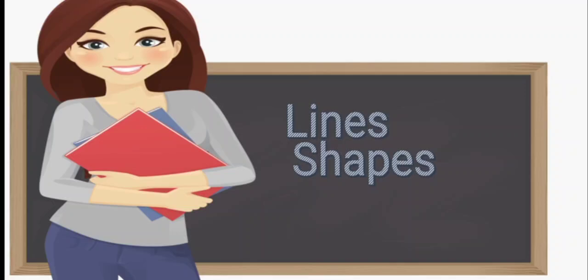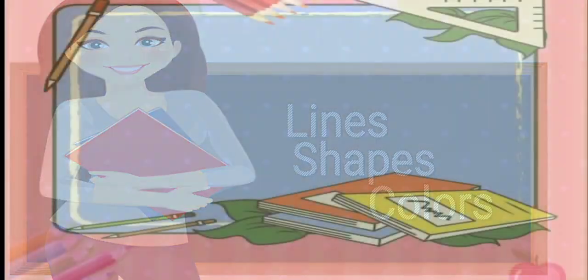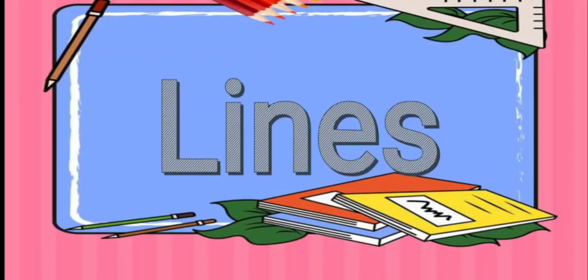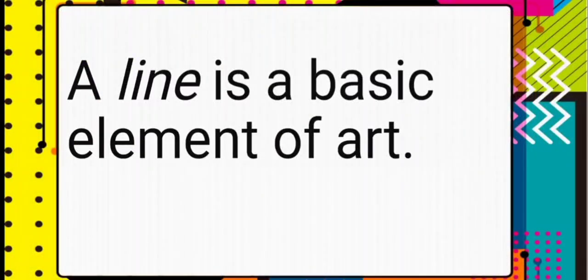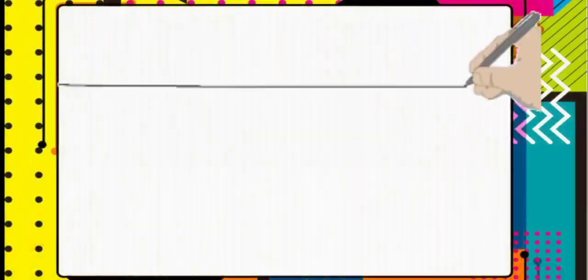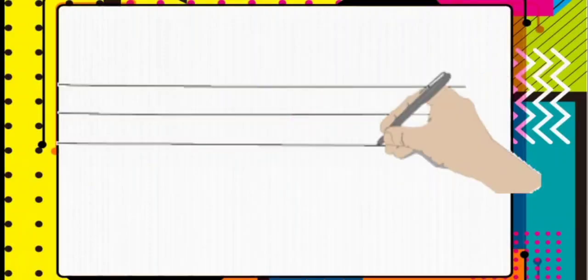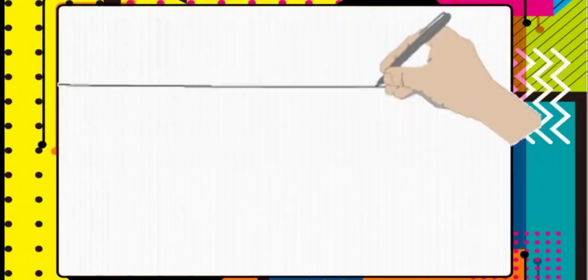You are expected to recognize the different kinds of colors in drawing. Let's start our lesson with lines. What is a line? A line is a basic element of arts. In drawing, it is made by moving a point on a surface.